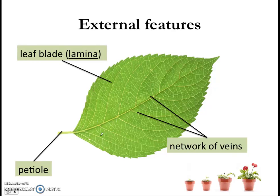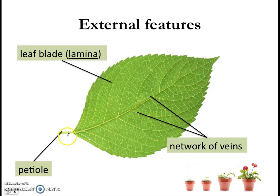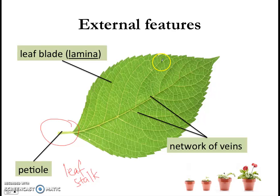Let's begin with the external features of a leaf. Here is a leaf — this is not Larry the leaf, because Larry has eyes, and this is just a normal leaf. This leaf has certain external features. Firstly, you will see what we call the petiole, or the leaf stalk. Just pick up any leaf from the ground and take a look. You will also see the leaf blade — the scientific word for it is the lamina. And besides that, you will also see networks of very tiny veins. Networks of veins — we'll see what they are for.